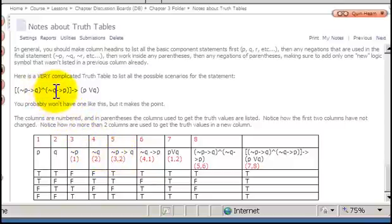Next, going back to the original statement, I have some other parentheses. I'm working from the innermost parentheses first, leaving the brackets for later. The next set of parentheses has negation q implies p. If not q, then p. That's what I'm putting in column 6.